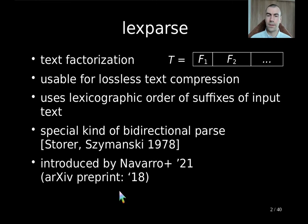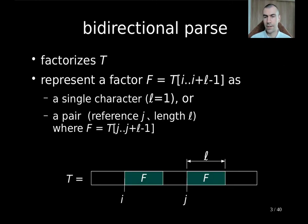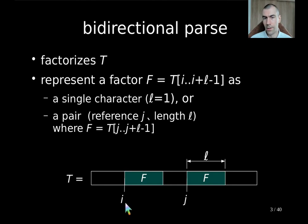Let us first review what a bidirectional parse is. Given a text T, the bidirectional parse factorizes T into factors. And given a factor f, this factor is represented either as a single character if the length is 1, or as a pair of reference j and length l. Meaning that if f starts at position i, there is another occurrence of f appearing at position j.